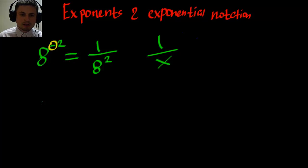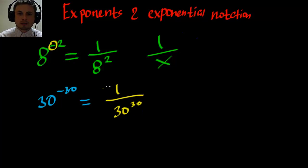In other words, let's just look at an example. Let's just say three to the negative power of 30. So what do you think this is? This will be one over 30 to the power of 30. So essentially, just one over x.